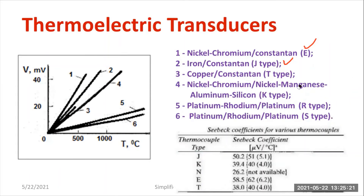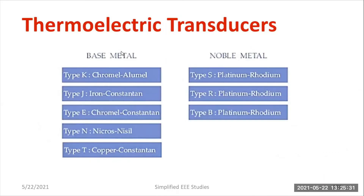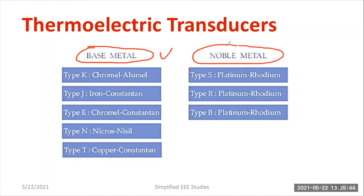The Seebeck coefficient varies with respect to the particular combination like J-type, T-type, etc. There are two categories of thermocouple combinations: base metal — which includes K, J, E, N, and T types — and noble metal, which includes platinum-rhodium type S and platinum-rhodium type R. For example, Nicrosil-Nisil is one of the base metal combinations.